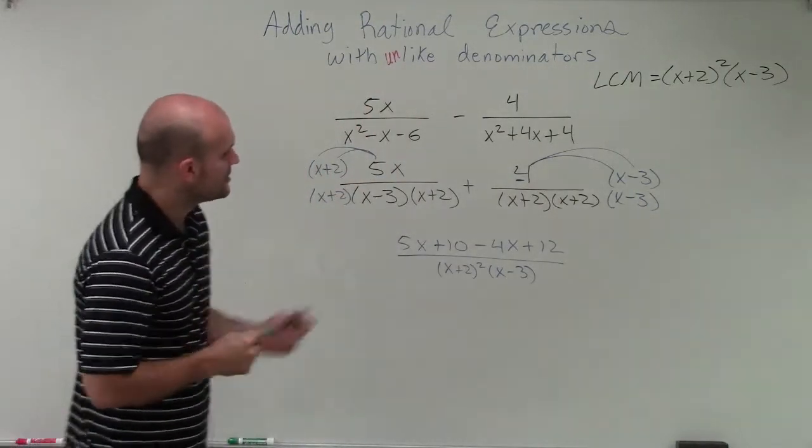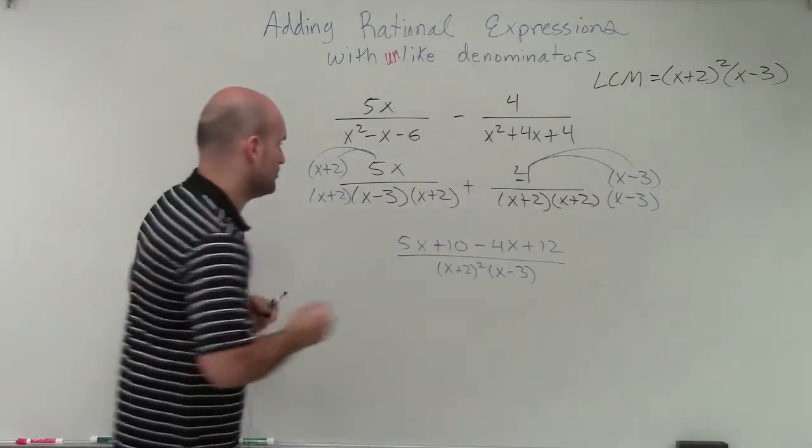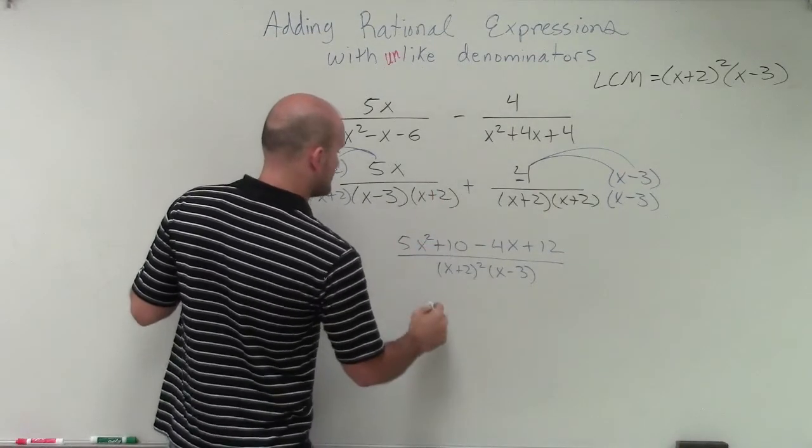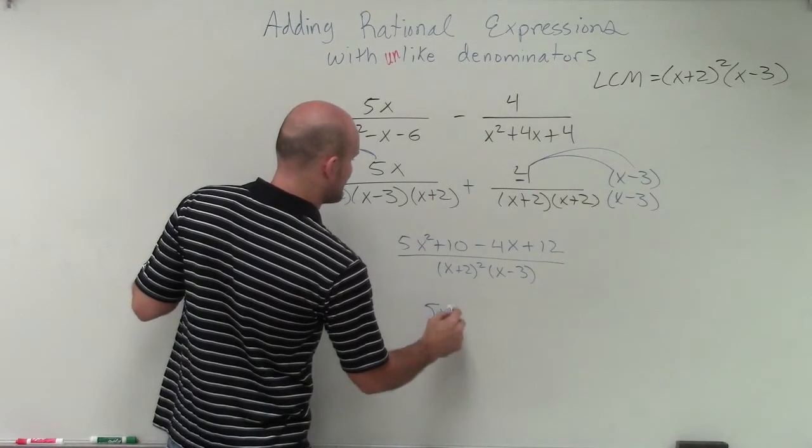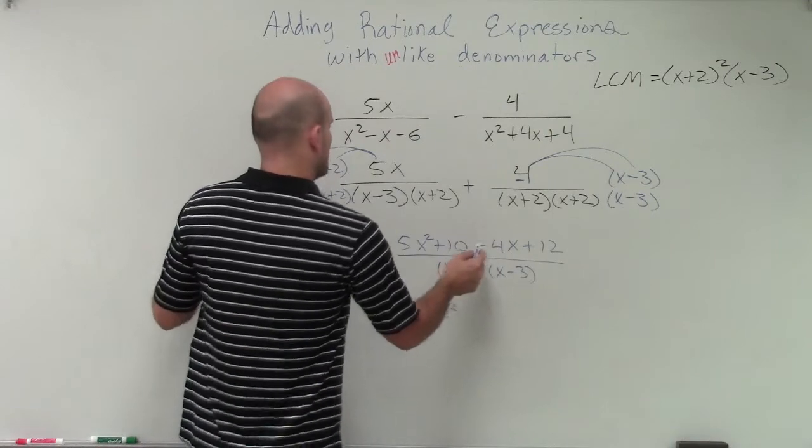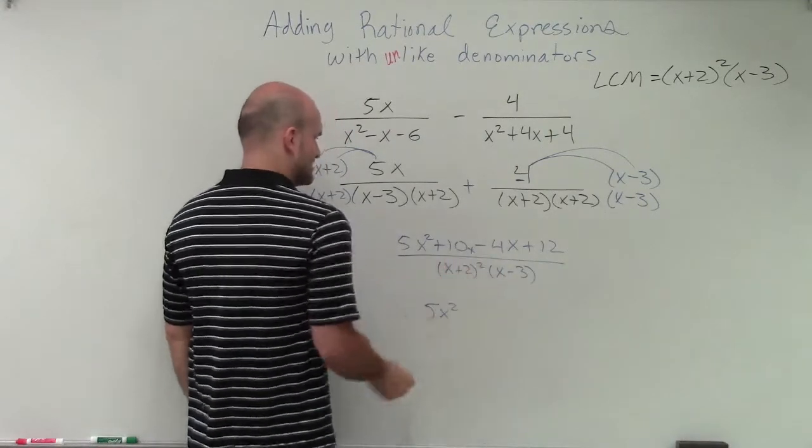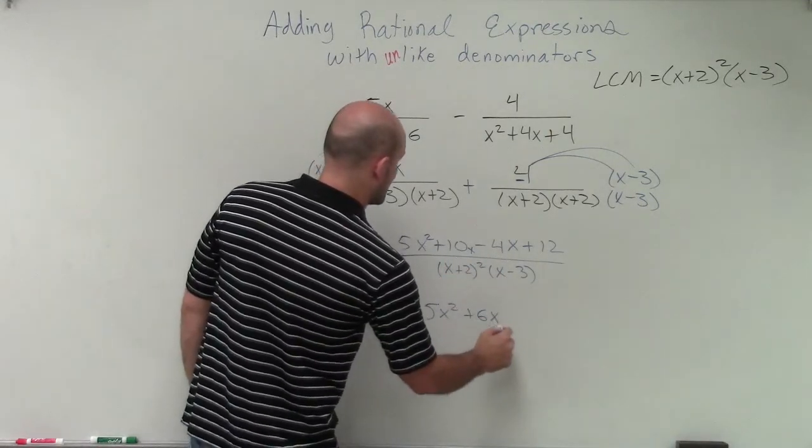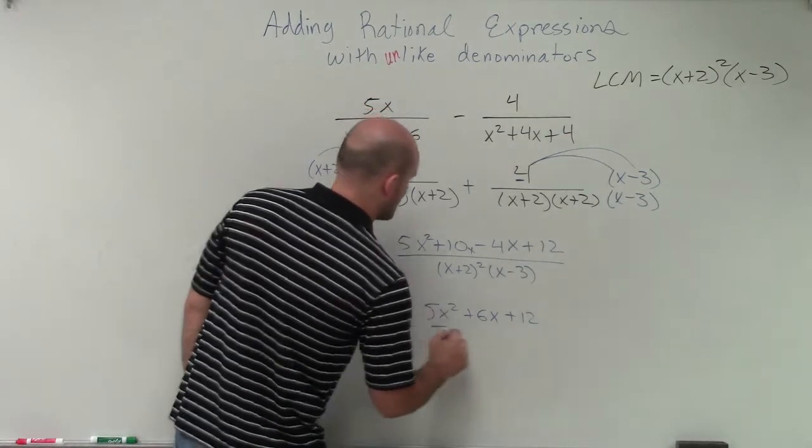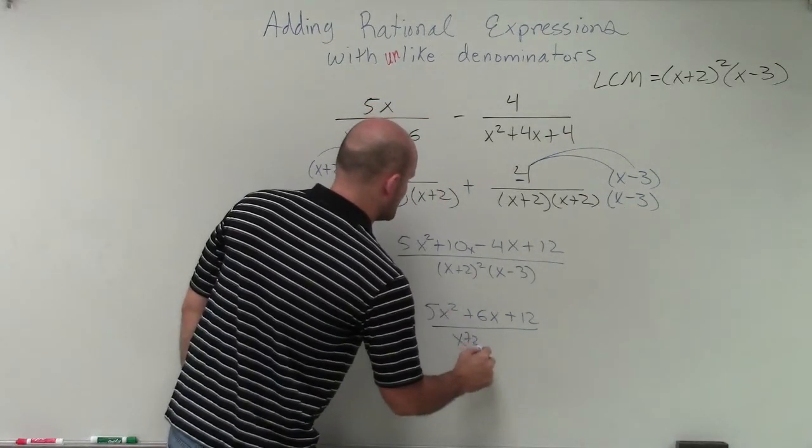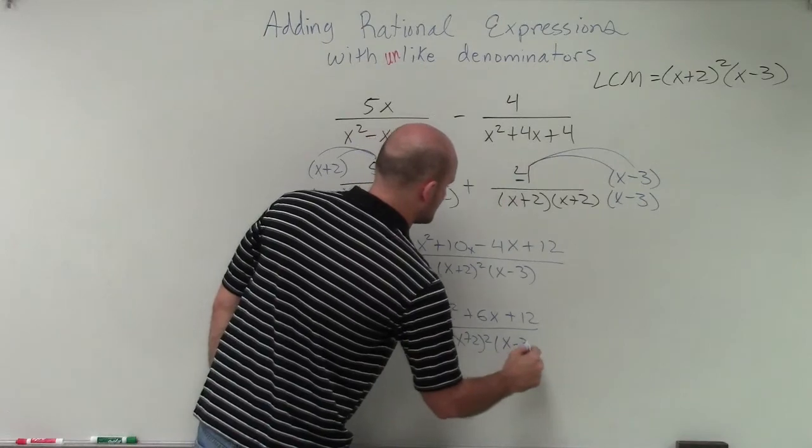So now, we can simplify our numerator. So therefore, my simplified numerator is 5x squared plus 6x plus 12 divided by x plus 2 squared times x minus 3.